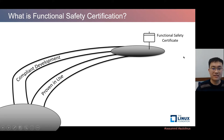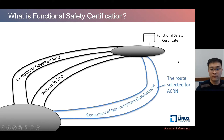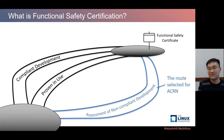The second route is proving in use: if the software has already been used in safety-critical situations for many hours, those statistics and failure rates can be used to achieve a certificate. Our focus will be the third route — assessment of non-compliant development. A piece of open source software is typically developed for general purpose from day one, and later we decide to reuse it in safety-critical situations. This is where the assessment of non-compliant development route applies.